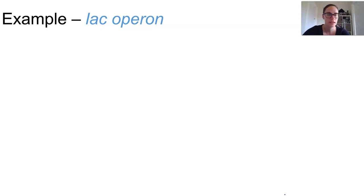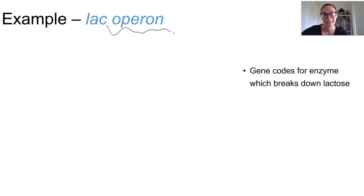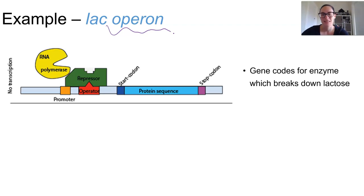An operon is essentially a gene that can be switched on and off using a promoter region right at the start of the gene which RNA polymerase can bind to. In the lac operon there are multiple genes and they actually code for an enzyme which can break down lactose. Lactose isn't the most ideal source of energy—they want to use something like glucose—but if it's going to be there they're going to use it.